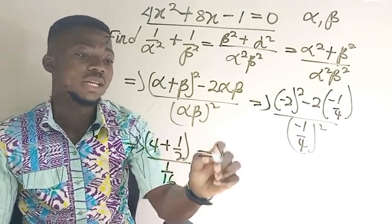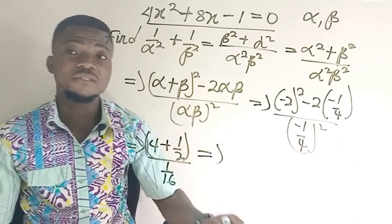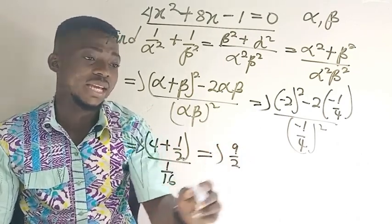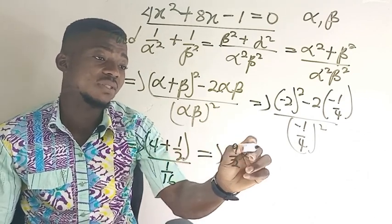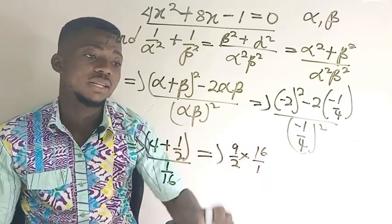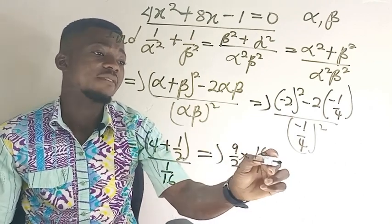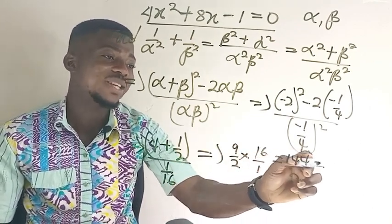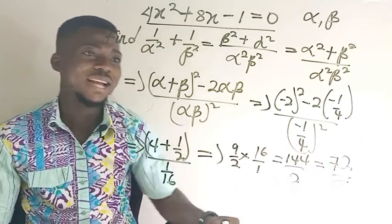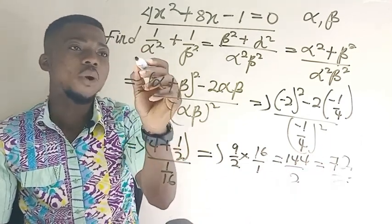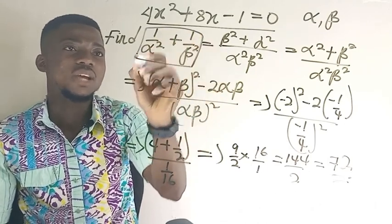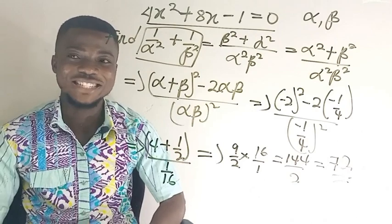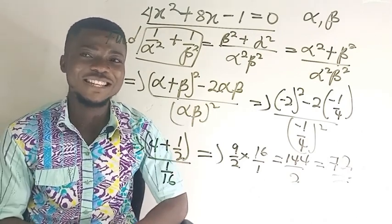Continuing: 4 plus 1 over 2 is going to give us 9 over 2. So divided by 1 over 16 is times 16 over 1. This one is going to give us 9 over 2 times 16, which is equal to 72. So therefore this whole expression, when we solve it, we're going to get 72 as the answer. Very, very simple.